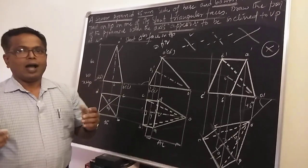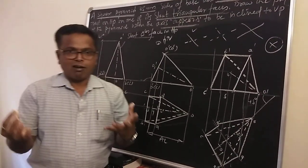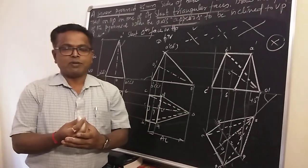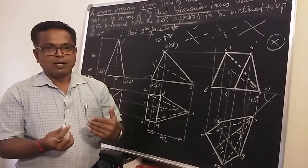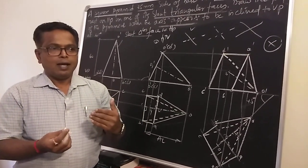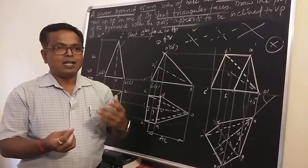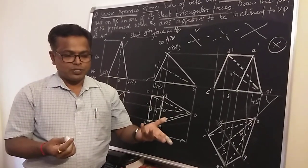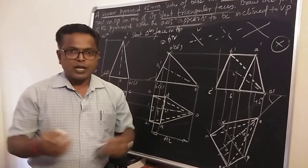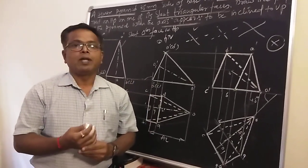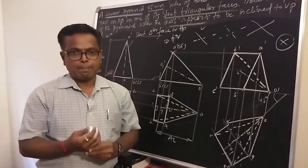This is the final set of top view and front view where a square pyramid is resting on HP on one of its slant faces, with the axis appearing to be inclined to VP at 45 degrees. Thank you for your patient listening.